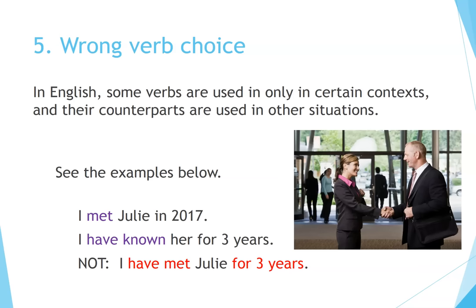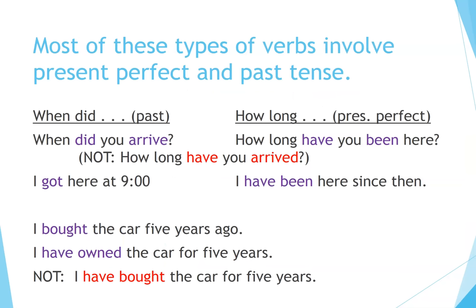Number 5: Wrong Verb Choice. In English, some verbs are used in only certain contexts and their counterparts are used in other situations. For example: 'I met Julie in 2017. I have known her for three years' — not 'I have met Julie for three years.' Most of these types involve present perfect and past tense. 'When did?' uses past tense; 'How long?' uses present perfect. 'I bought the car five years ago. I have owned the car for five years' — not 'I have bought the car for five years.'